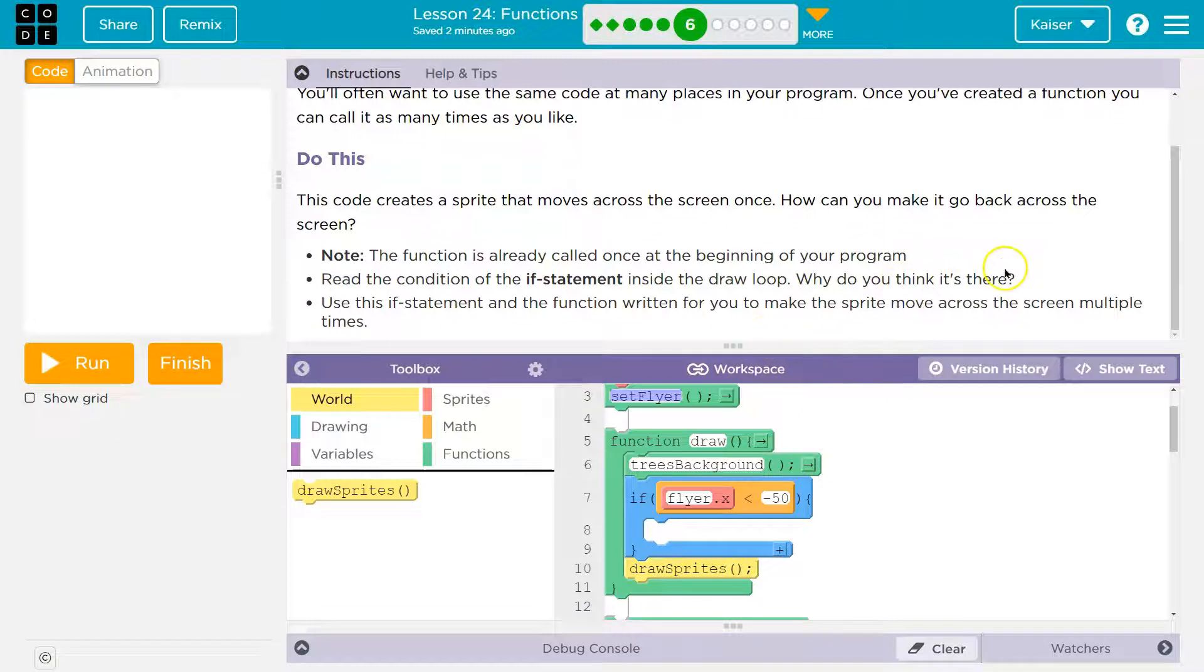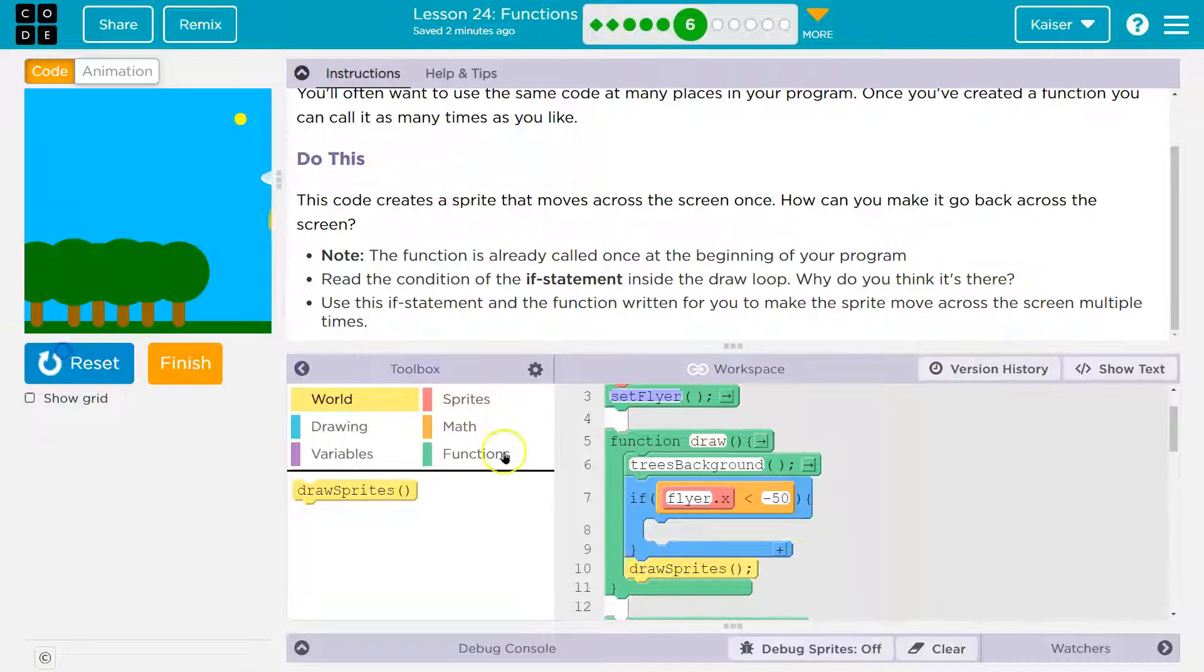All right. So if it's less than negative 50, why do you think it's there? Use the if statement and the function written for you to make the sprite move across the screen multiple times. Okay. So right now, it's only going to go once.